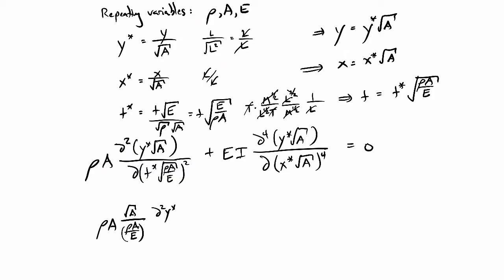Then we do the same thing for the next term: square root of A in the numerator times d to the fourth y star, and in the denominator we have the square root of A to the fourth — so that'll be A squared that we pull outside — all over d(x*)⁴, all equal to zero.